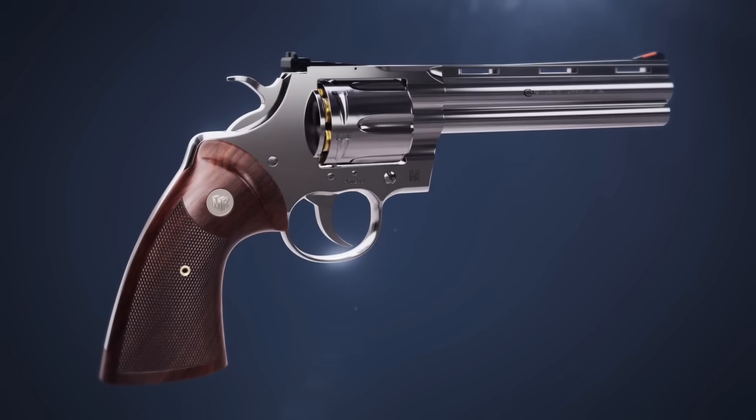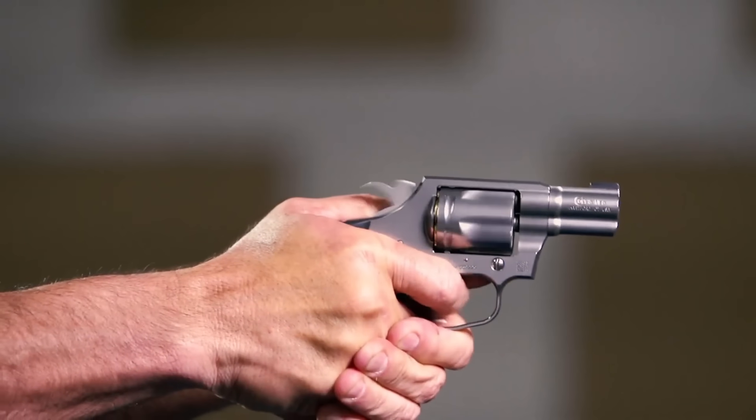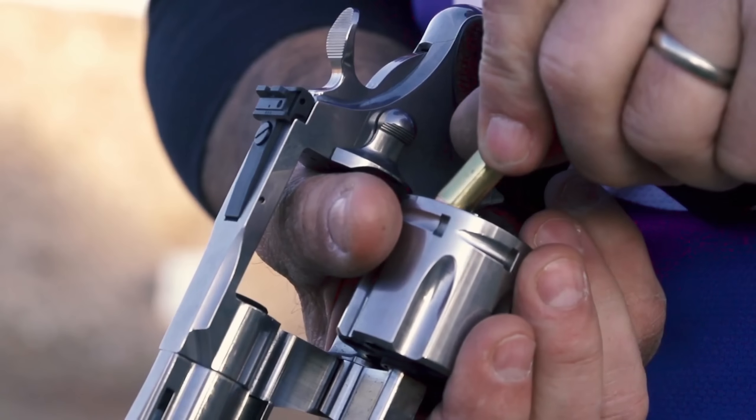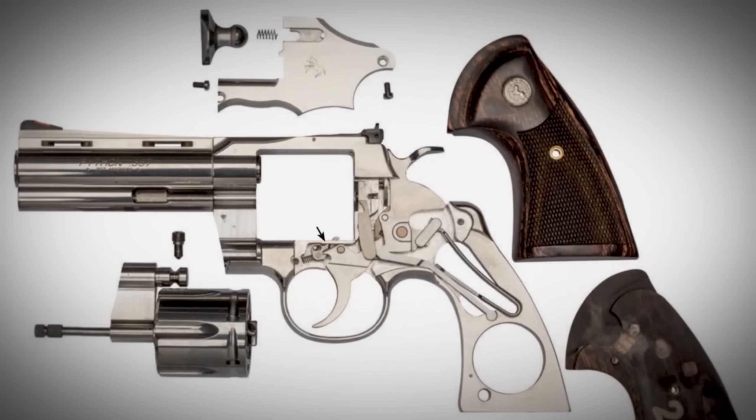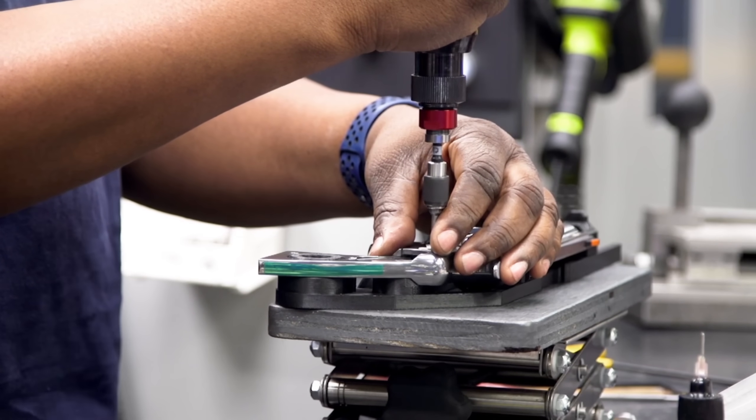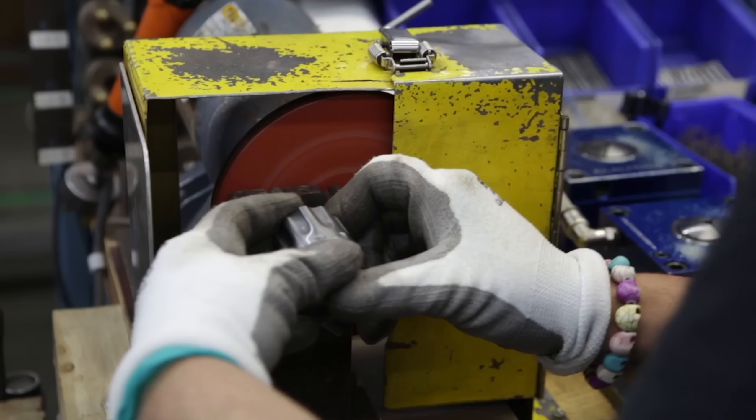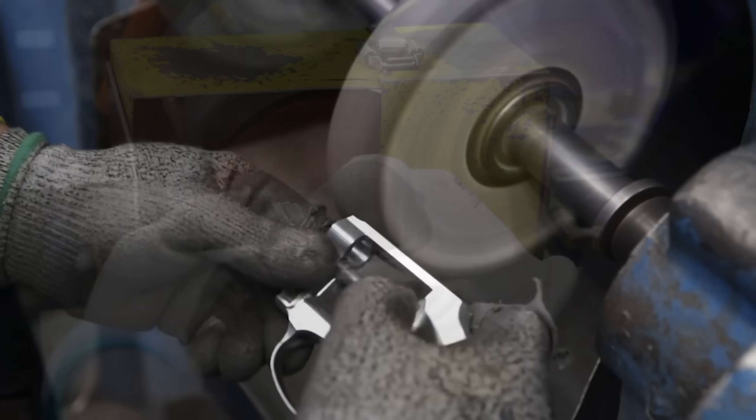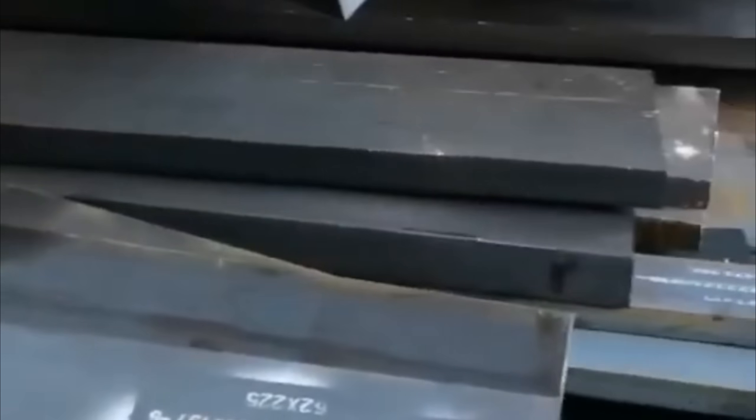Have you ever wondered how revolvers are made? These iconic firearms, rooted in the history of the American Wild West, are more than just relics. They're an impressive example of precision engineering. Today, we'll take you through the entire process, step by step. We'll focus on how raw steel blocks are sourced and inspected.